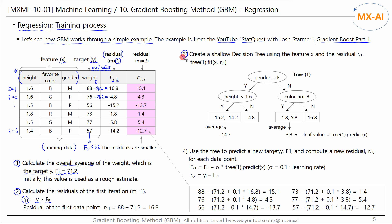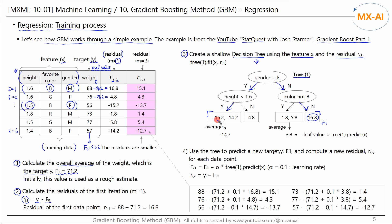The third step is to create and train a decision tree using the feature X and the residuals R, rather than the target Y. For the first data point, the gender is male, so we move it to the right; since its favorite color is blue, it belongs to the fourth leaf node. For the third data point, the gender is female and height is 1.5, so it belongs to the first leaf node. A total of 6 training data points are assigned to each leaf node, and calculating the average of each leaf node yields the leaf value — these are the new residuals estimated using this tree.